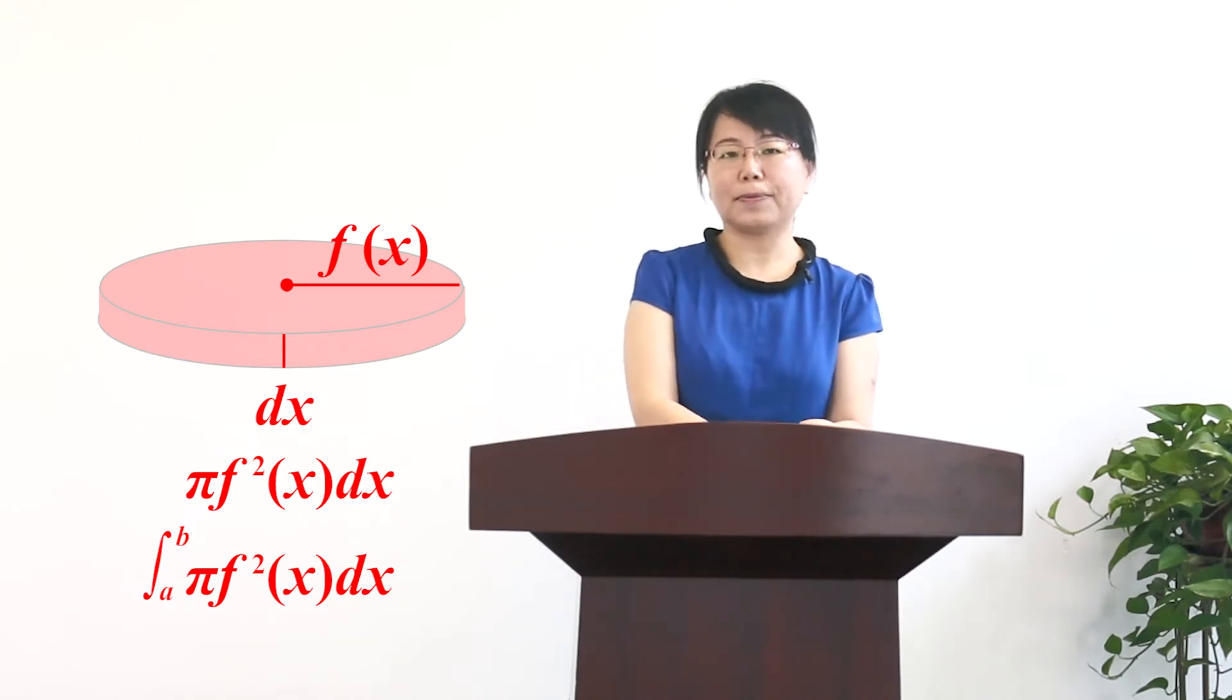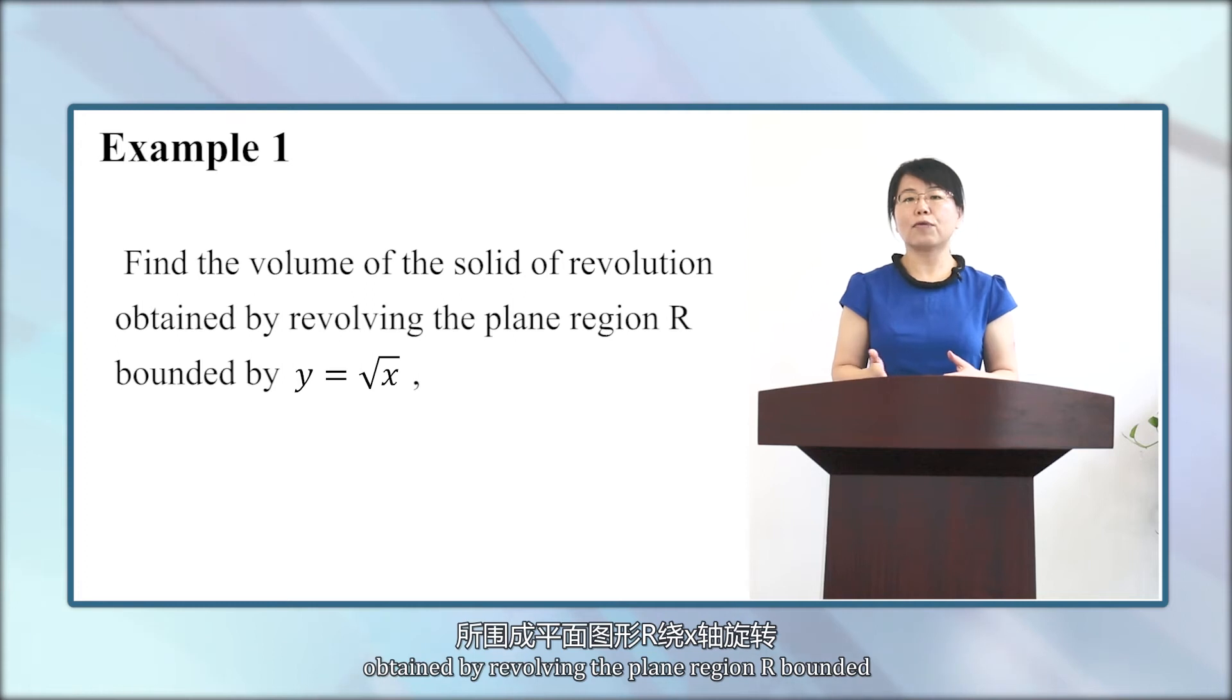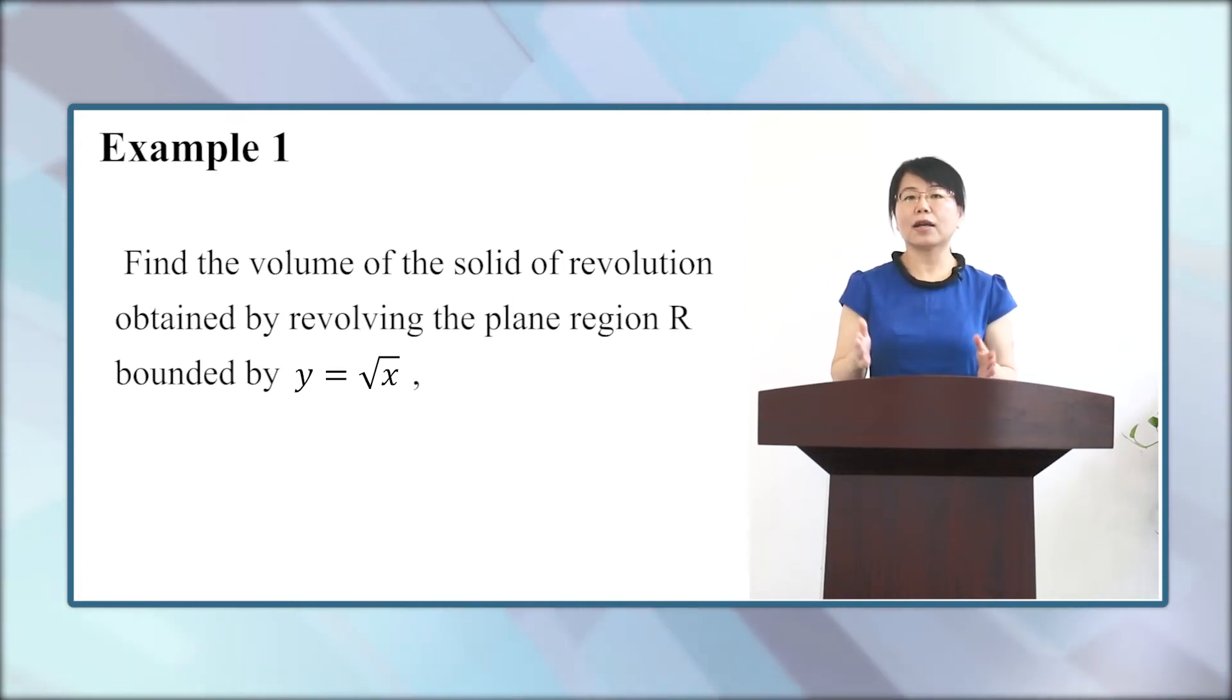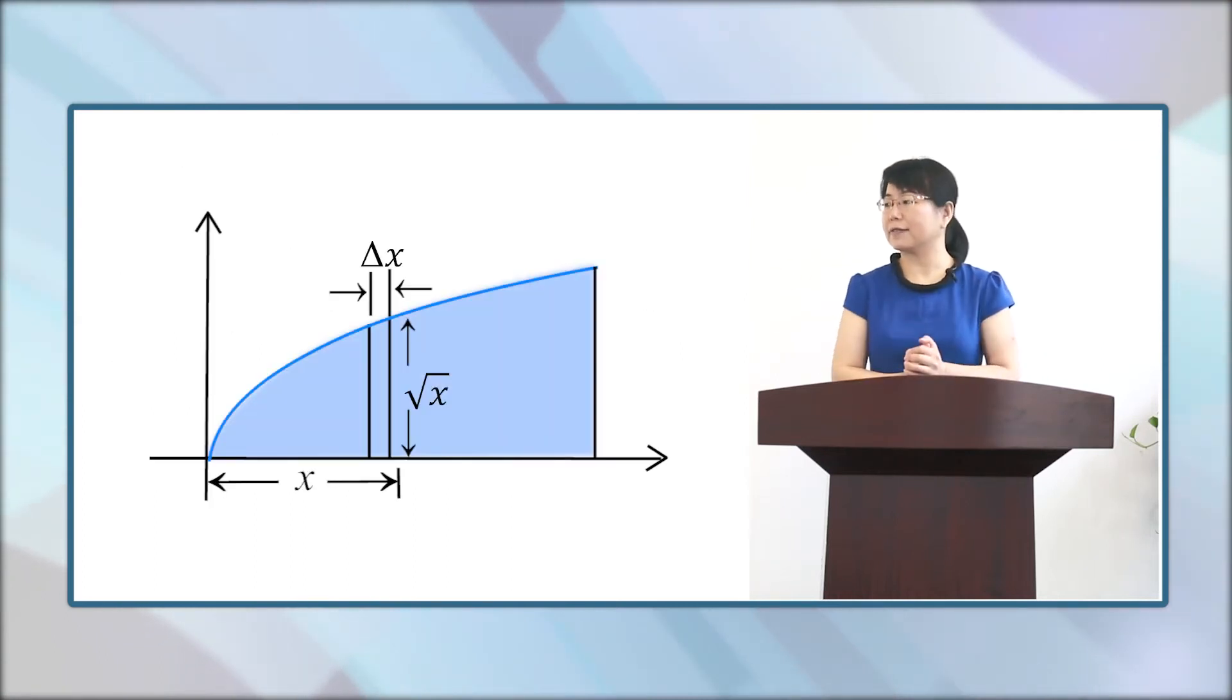Now let's see one example. Find the volume of the solid of revolution obtained by revolving the plane region R bounded by y equals square root of x, the x-axis, and the line x equals 4 about the x-axis. Now let's see this figure.